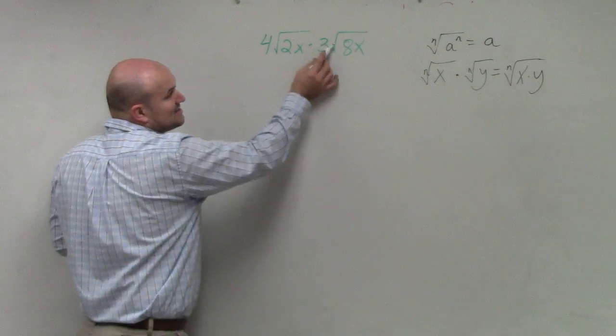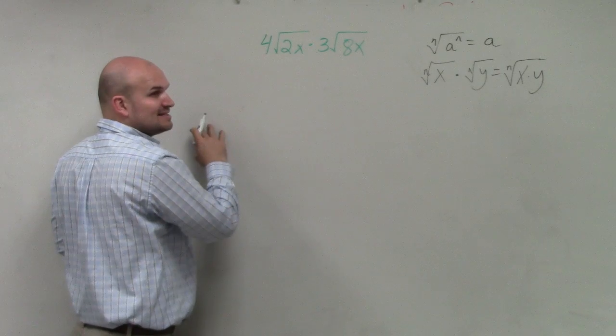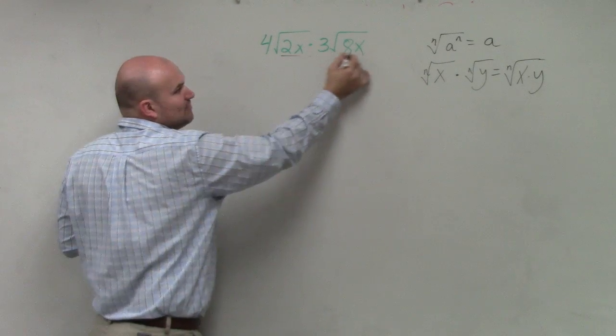So as long as my index, which in this case is the same, right? These are both square roots. As long as my index is the same, all I do is multiply my radicands.